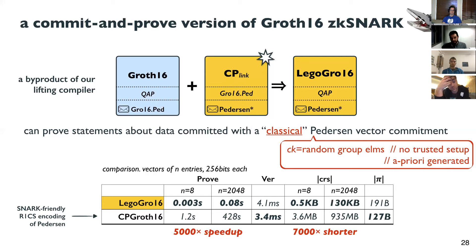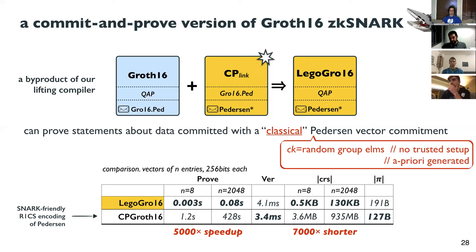The proving time we obtain is much faster than going through the circuit approach, and becomes more and more faster as the length of the committed vector increases. The downside is that our verification cost is slightly more expensive and our proof size is slightly larger, but not much more. Essentially we're trading a bit of verification cost for a much higher speedup in proving. We can also save in CRS size because the part encoding the commitment is now much smaller.